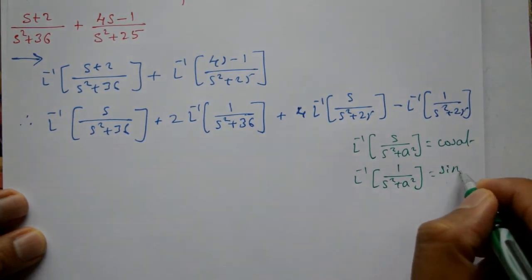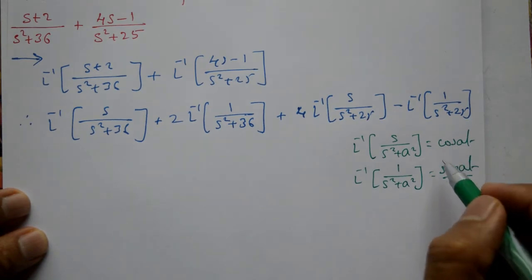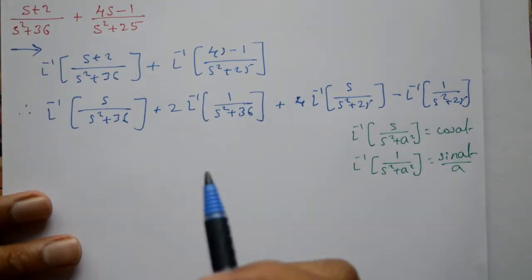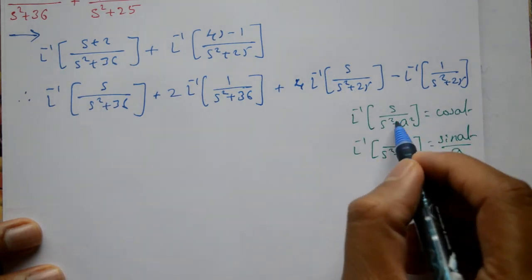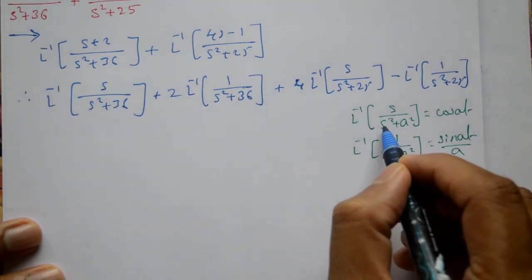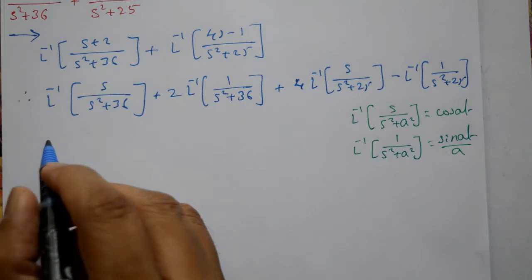We're using these two functions here. The first one is using this standard function s by s squared plus a squared. Here a is 6.